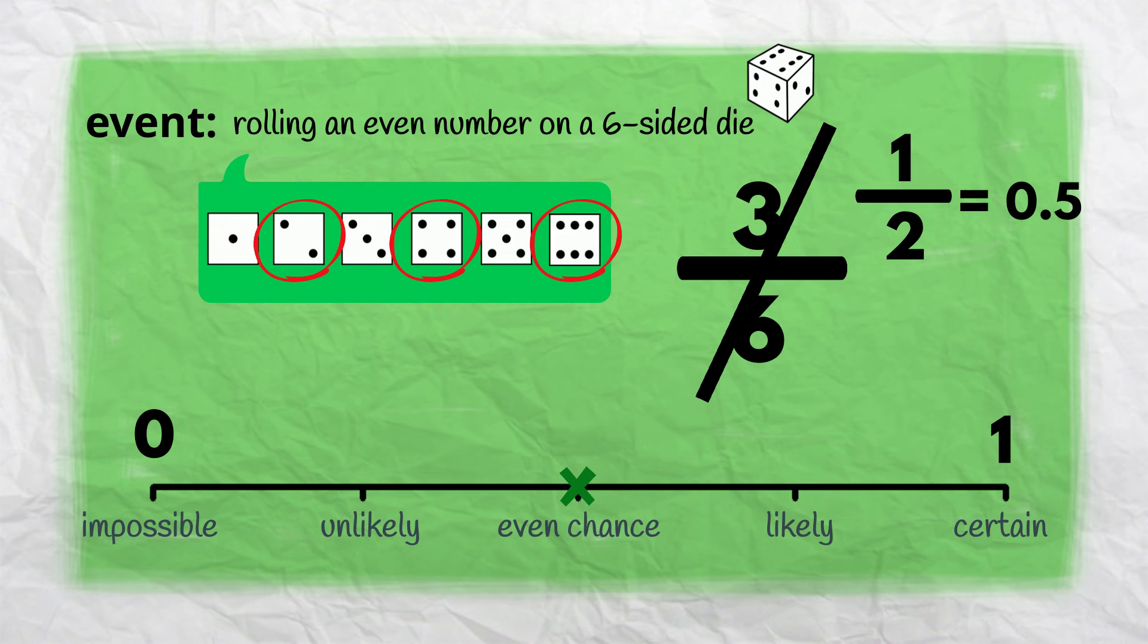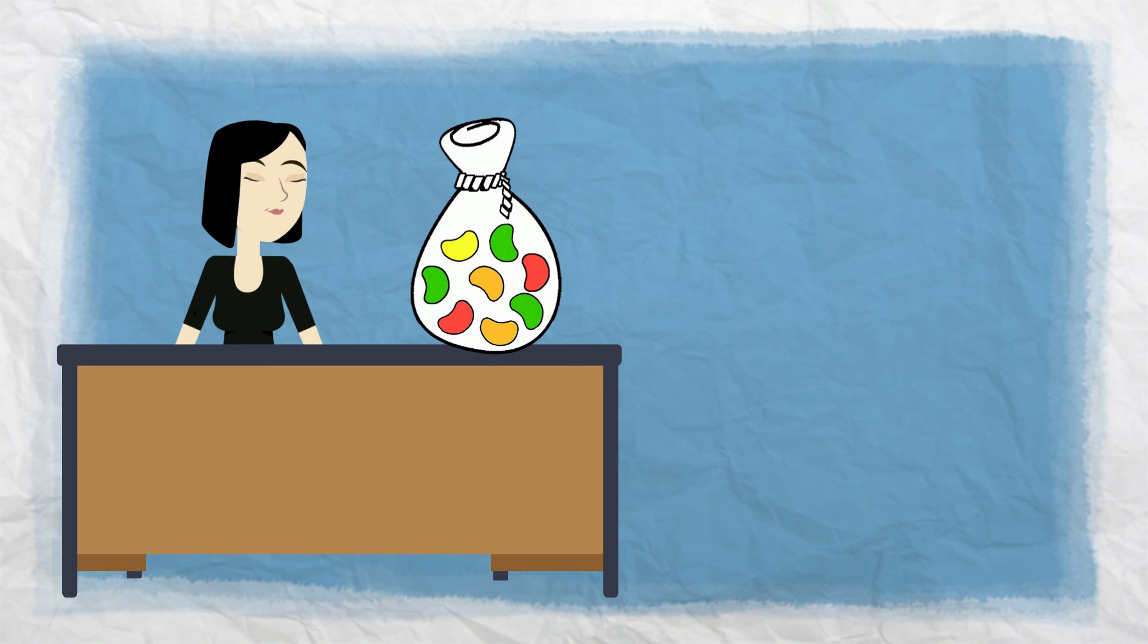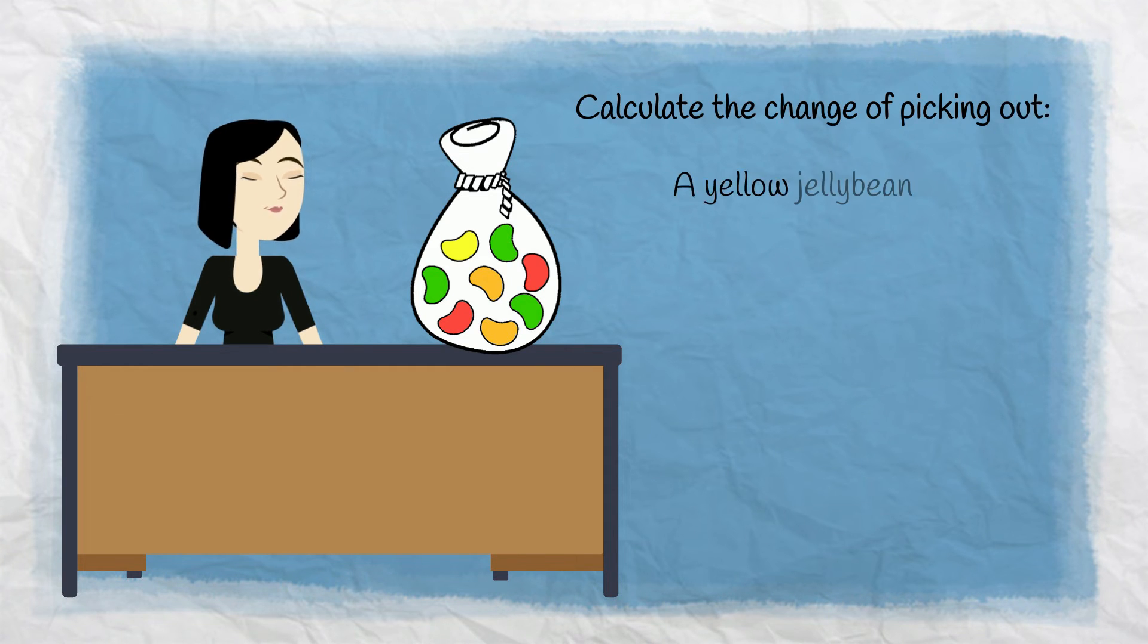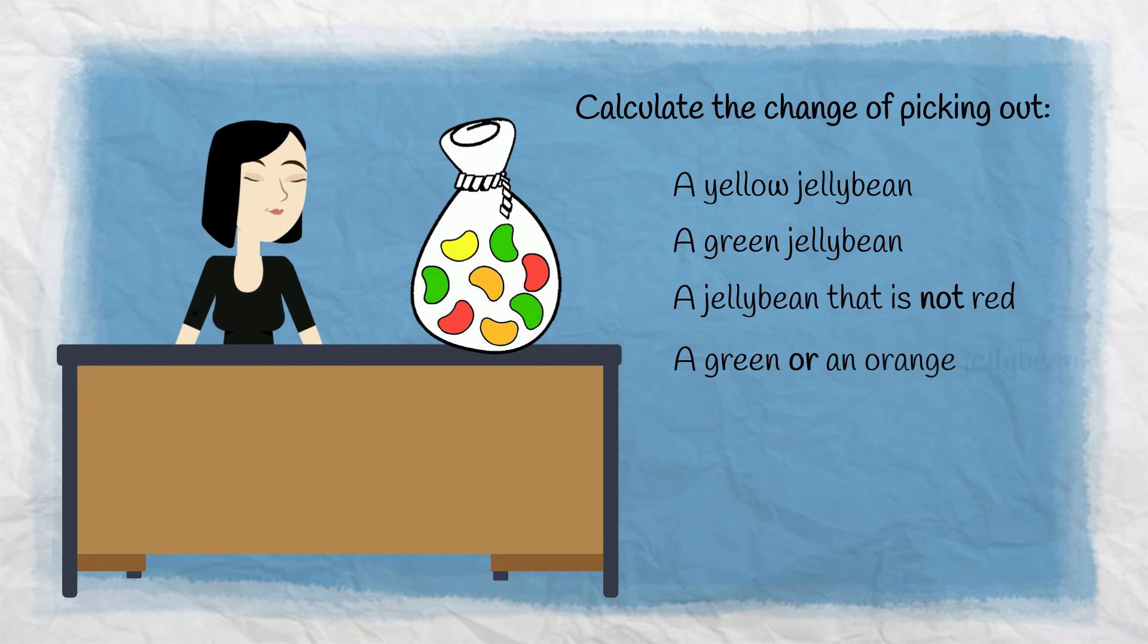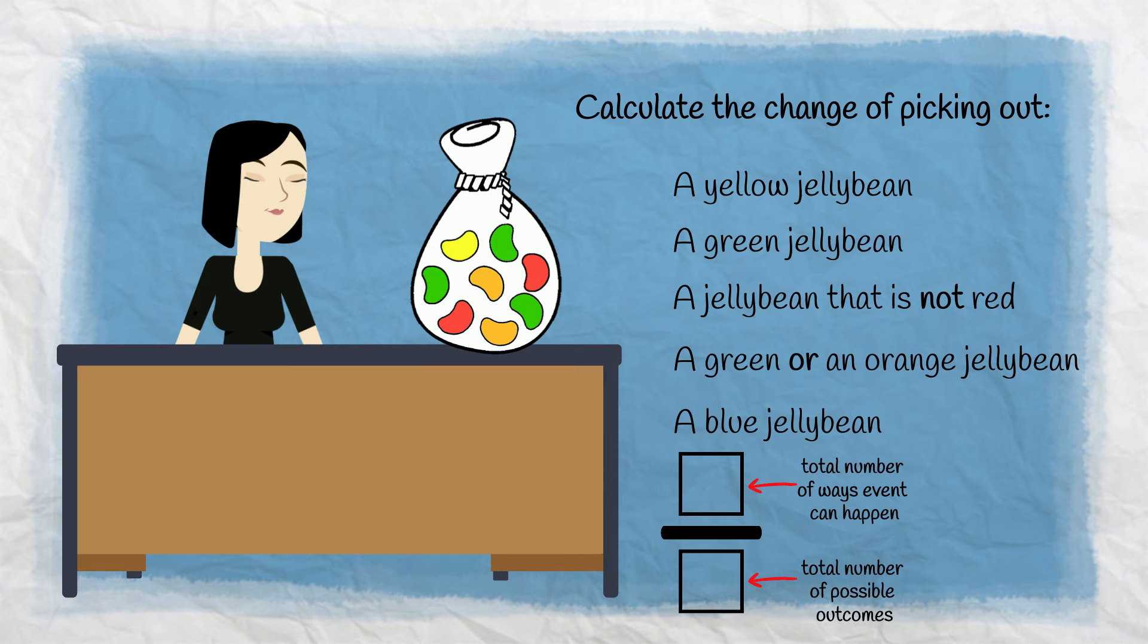Simplifying this fraction, we get 1 in 2, an even chance. 1 divided by 2 is 0.5. Let's now consider a new scenario: imagine closing your eyes and choosing a jelly bean from this bag. Calculate the chance of picking out a yellow jelly bean, a green jelly bean, a jelly bean that is not red, a green or an orange jelly bean, or a blue jelly bean. Remember to use the formula to calculate the fraction and decimal. Pause here while you work.